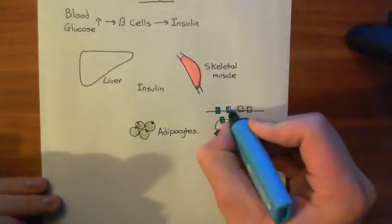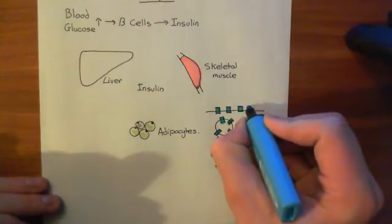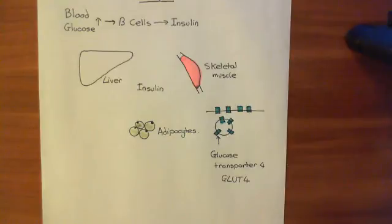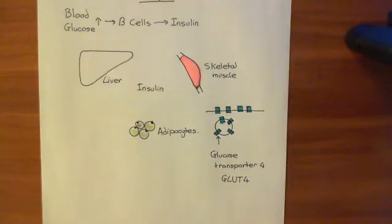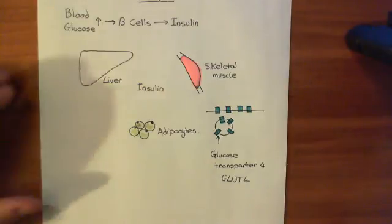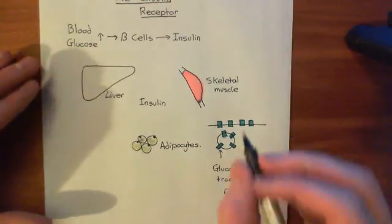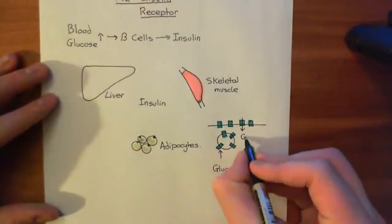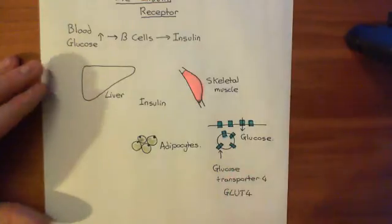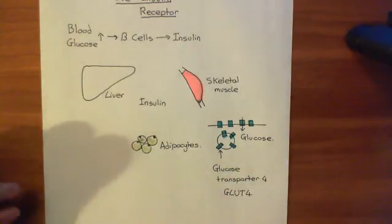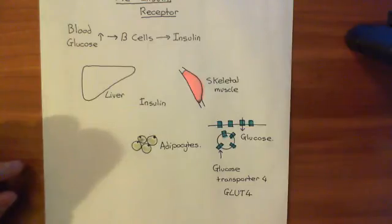The reason you don't have these GLUT4 transporters on the membrane all the time is that they aren't unidirectional — it's not like they just allow the movement of glucose into the cell; they also allow the movement of glucose out. If blood glucose is not very high, having GLUT4 transporters in the membranes of adipocytes and skeletal muscle cells would cause glucose to move out of those cells into the blood. So you only put them in when you know blood glucose is very high — when insulin is high, you know blood glucose is high, and therefore you can insert the GLUT4 transporters and get glucose moving into the cell.